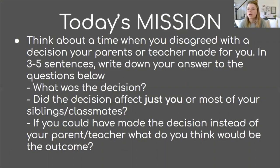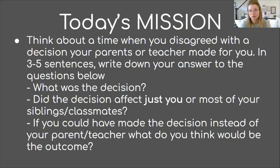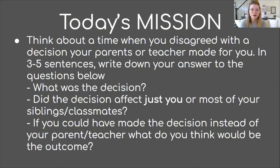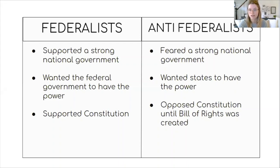Think of a time where maybe a mom, dad, aunt, grandma, teacher, or coach made a decision for you and you didn't like it — I'm sure you'll have plenty of examples. In your three to five sentences, answer: What was the decision they made? Did it affect just you or most of your siblings and classmates? And finally, if you could have made the decision instead of your parent or teacher, what do you think would be the outcome? Go back to your T-chart as you're answering and look at which side your argument falls on.